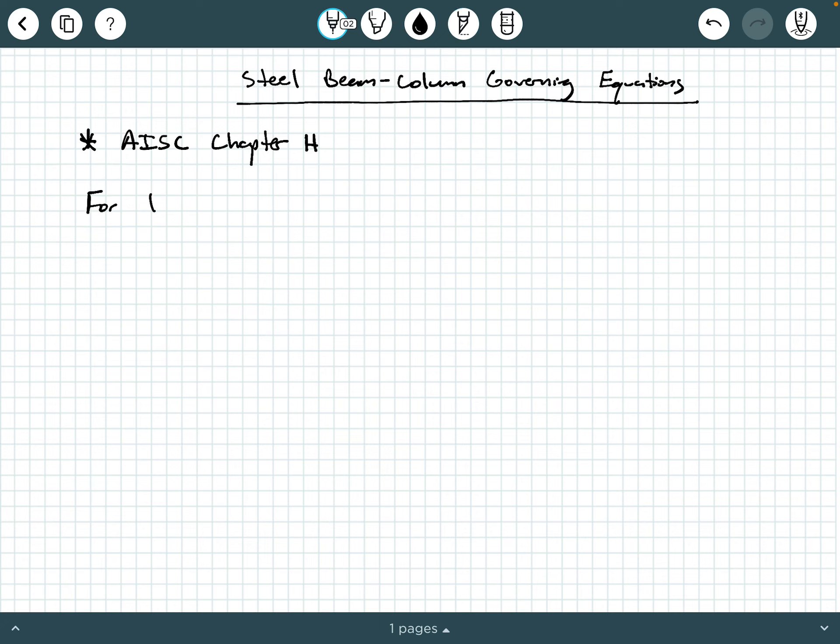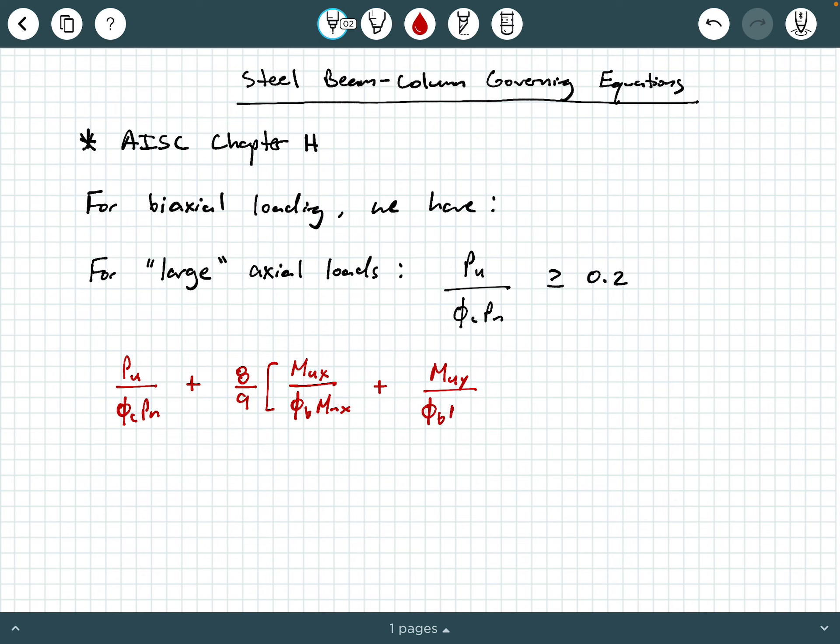For biaxial loading, we have the following AISC governing equations. So for large axial loads where you have a PU over φcPN ratio greater than or equal to 0.2, our governing equation is going to be PU over φcPN plus 8 ninths times MUX over φB MNX plus MUY over φB MNY, and this interaction should be less than or equal to 1.0.